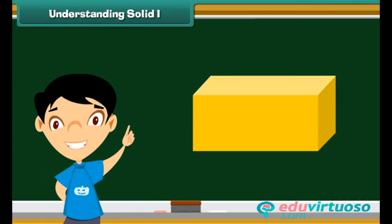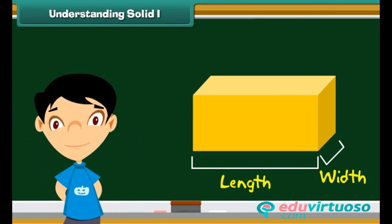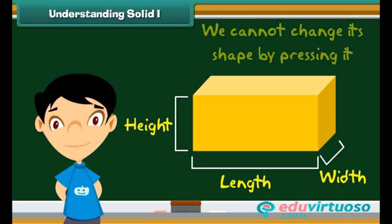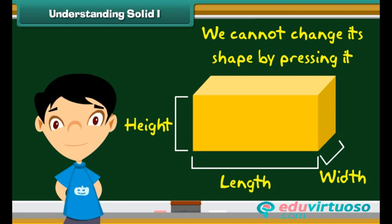Friends, look at this brick. This is a solid. This brick has a fixed shape. It has length, width and height. It is hard. We cannot change its shape by pressing it. Thus, we can say a solid has definite shape and size and cannot be pressed easily.